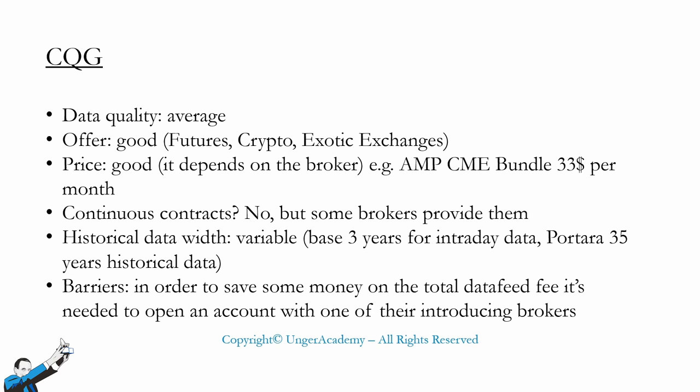The range of historical data in this case is variable — basically it's three years for intraday data. If you want more, there's another partner of AMP called Portara that provides historical data going back 35 years, but only historical data — Portara can't be used live. There are barriers to entry: the subscription can be very expensive if you don't go through an introducing broker, potentially over $200 a month for a variety of instruments. To save money, you will need a broker account with one of their partners — you'll find all the necessary information on the CQG website.